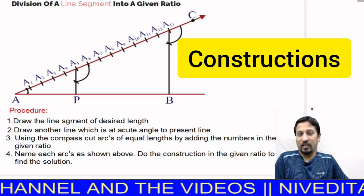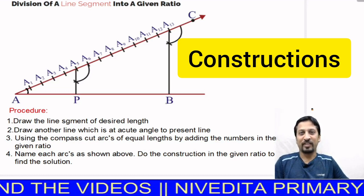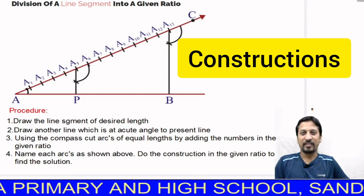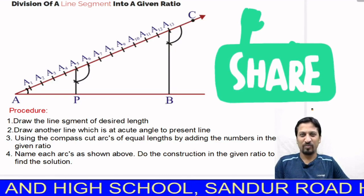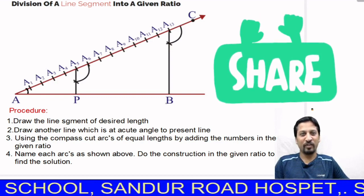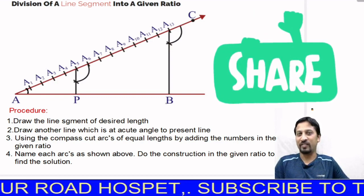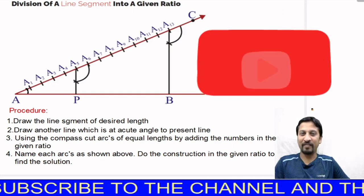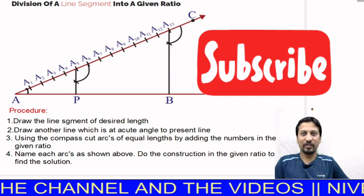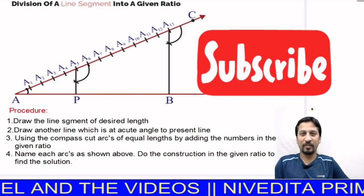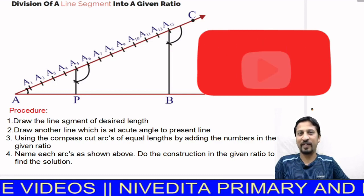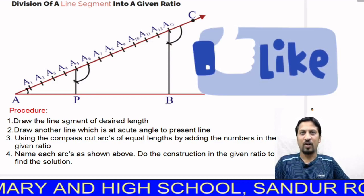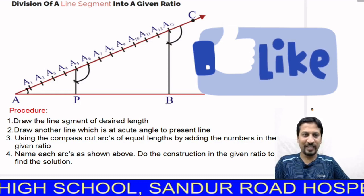Hi children, let us start a new chapter that is Construction. This chapter is very interesting and easy. The first topic we are going to discuss is division of a line segment into a given ratio. You will be given a line and a task to divide it in a certain ratio. Let us see how to do that.